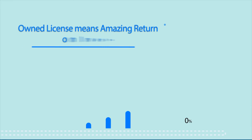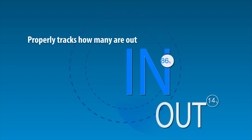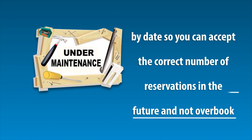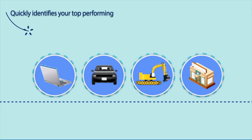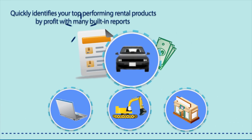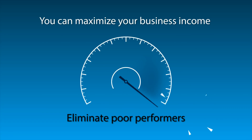What makes Sales Igniter rental booking system different than the rest? Fast setup, free training, and owned license means amazing return on investment. Real rental inventory tracking properly tracks how many units are out, in, or under maintenance by date, so that you can accept the correct number of reservations in the future and not overbook.